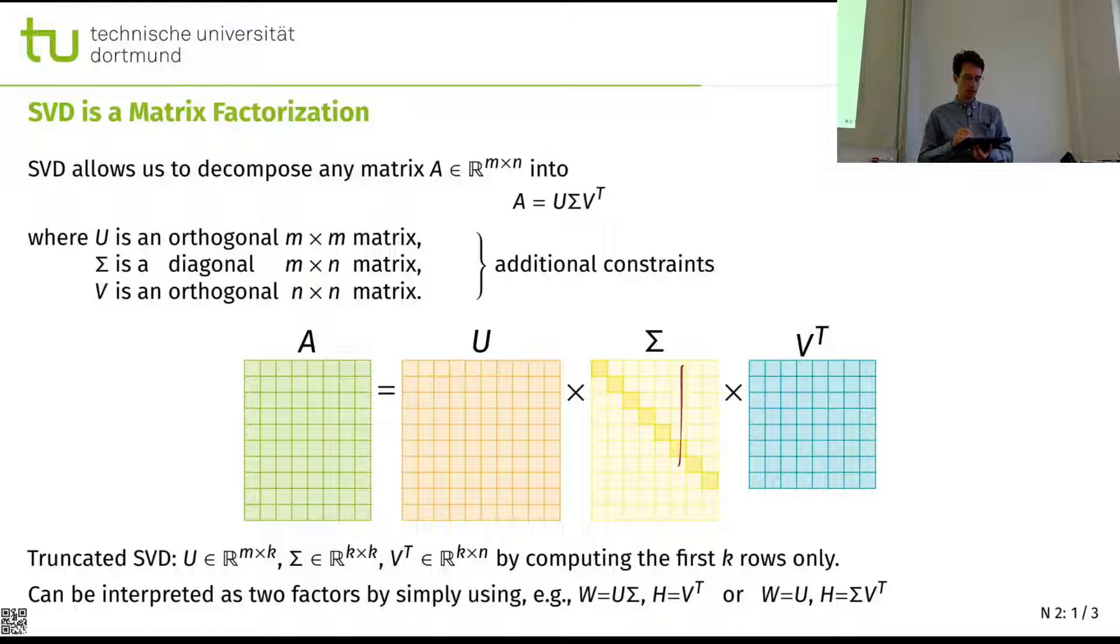And then we can also do the truncation. And if we truncate this, we get the smaller matrices. And then we get the approximation. Then this won't be exact anymore, usually. I mean, if you truncate zeroes, it will be fine.